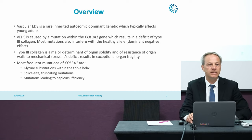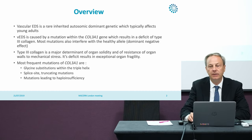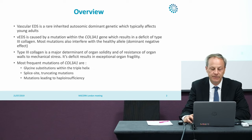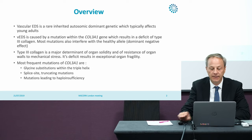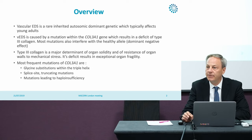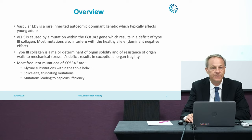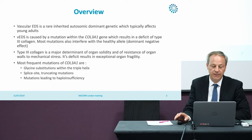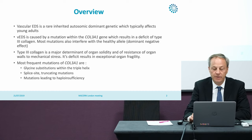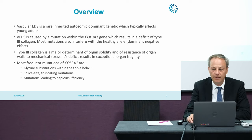As you all know, vascular Ehlers-Danlos syndrome is a rare inherited genetic condition caused by mutation within the COL3A1 gene that results in a defect of type 3 collagen. Most mutations will interfere with the healthy allele and have a dominant negative effect. As type 3 collagen is a major determinant of mechanical resistance of organs to mechanical stress, its deficit will result in exceptional organ fragility. The most frequent mutations are glycine substitutions within the triple helix, splice site and truncating mutations, and mutations leading to haploinsufficiency.